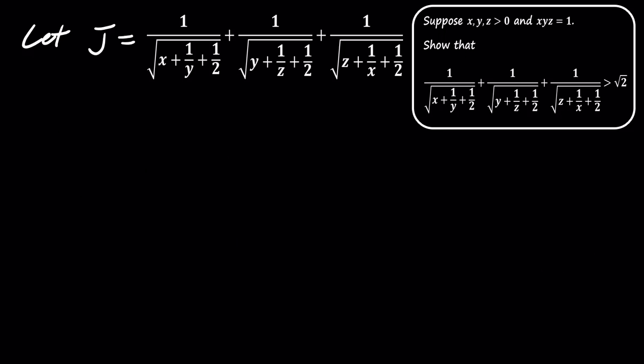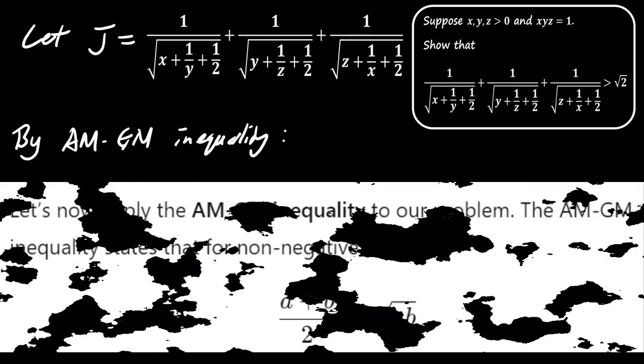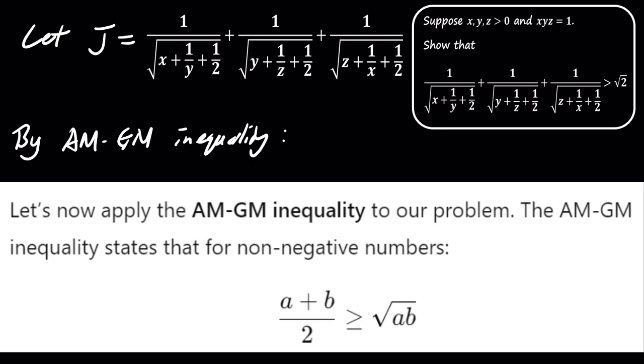Now, let's apply the arithmetic mean-geometric mean inequality, also known as the AM-GM inequality. The AM-GM inequality tells us that for any non-negative numbers, the arithmetic mean is always greater than or equal to the geometric mean.